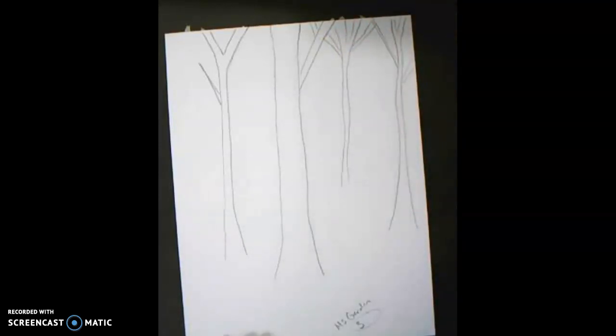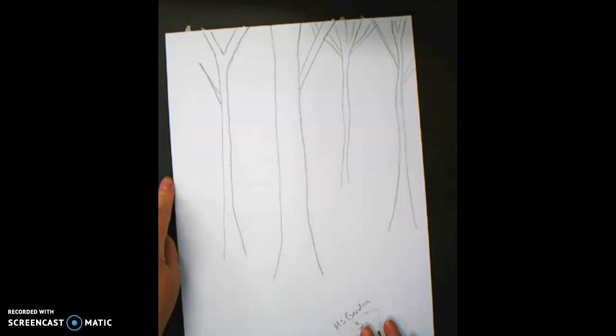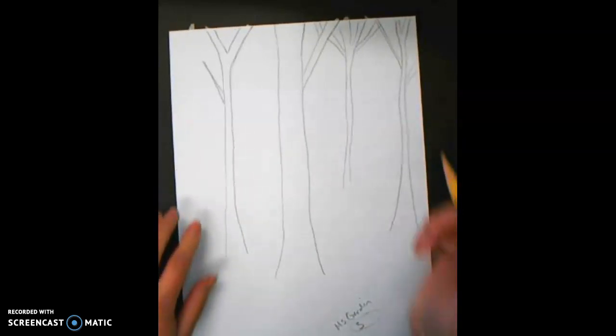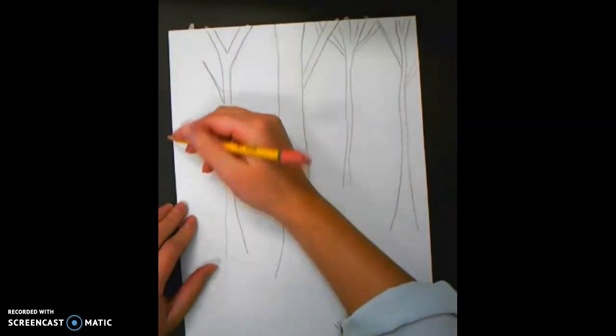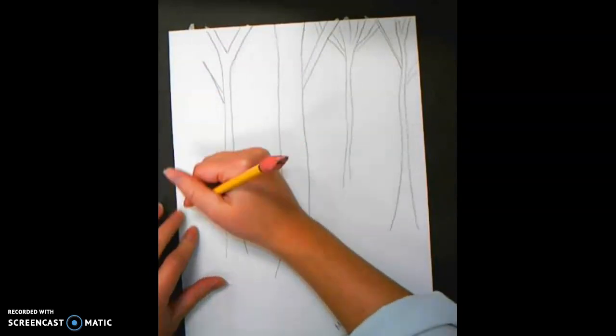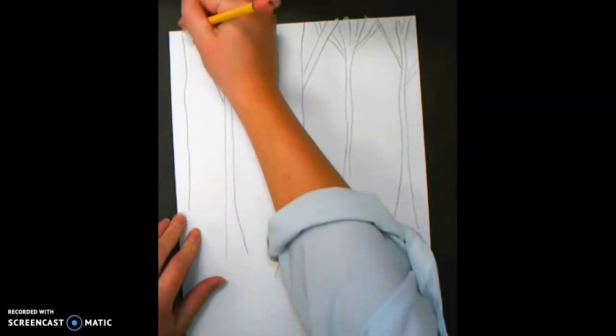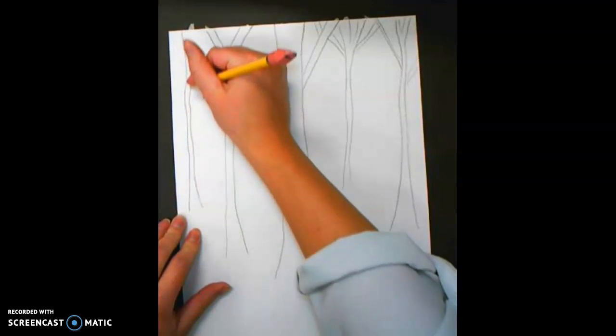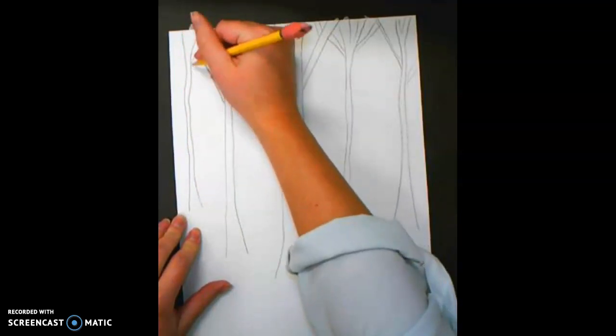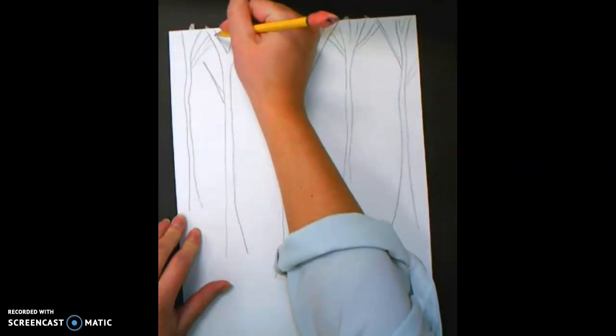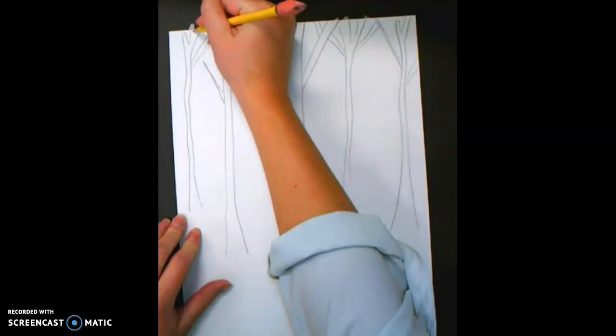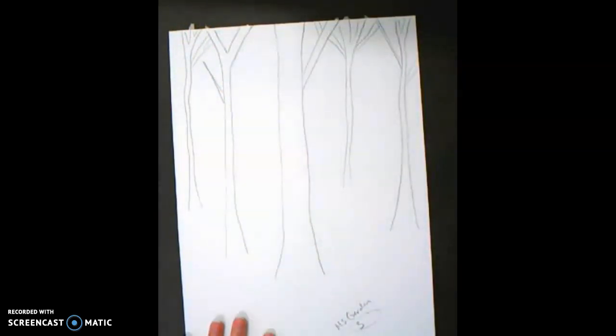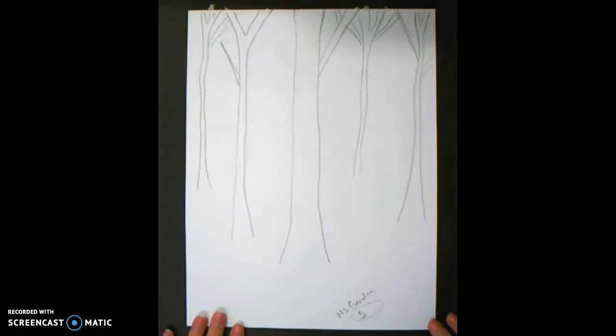Just adding some branches here and there. If you have somewhere that you think you could fit another one, feel free to add. You should have about four or five trees when you're done, especially if you're drawing. If you're using the tape, it can be a little trickier to get four or five trees on there because of how thick the tape is. And there you go. So it's the start of your forest.